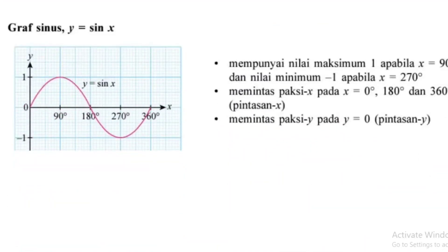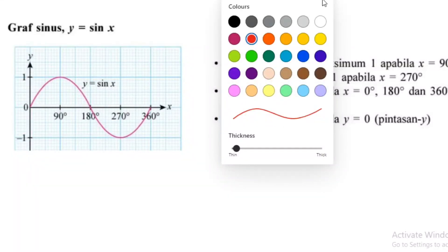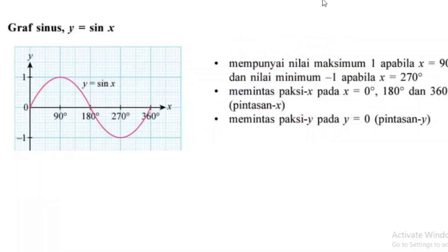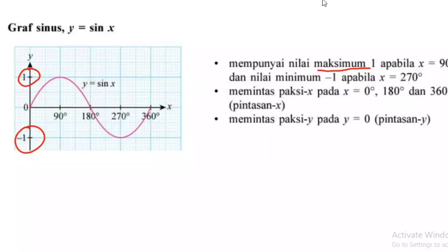Kita tengok dulu graf yang pertama: graf sin. Graf sin mesti bermula dengan kosong. Dia sampai 1 pada 90 darjah, sampai 180, sampai 360. Nilai maksimum adalah 1, nilai minimum adalah negatif 1. Graf sin memintas paksi X pada kosong, 180, dan 360. Memintas paksi Y pada Y sama dengan kosong.